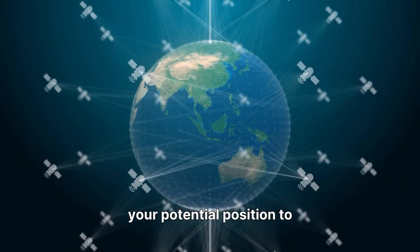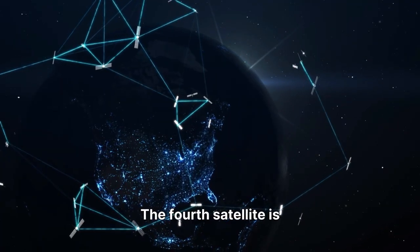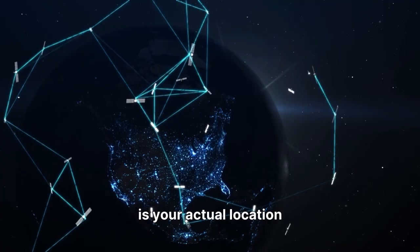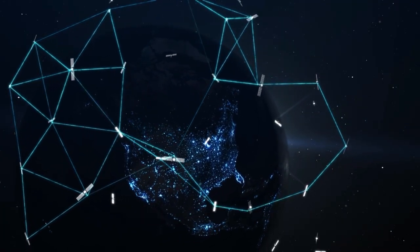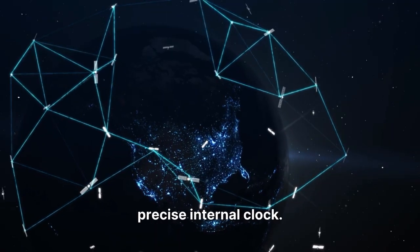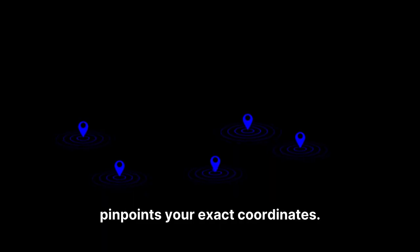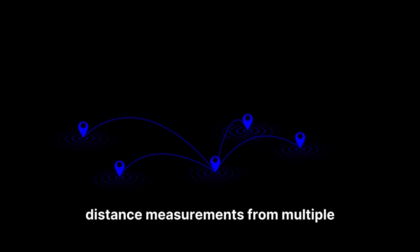The fourth satellite is crucial for resolving which of these two points is your actual location, and more importantly, for correcting any timing errors in your receiver's less precise internal clock. This process, known as trilateration, is how GPS pinpoints your exact coordinates. It's not triangulation, which uses angles, but rather distance measurements from multiple points.